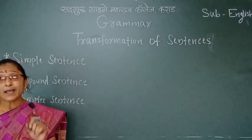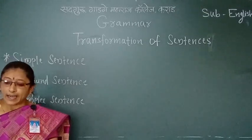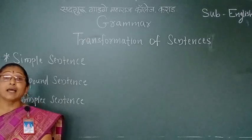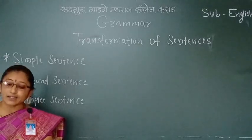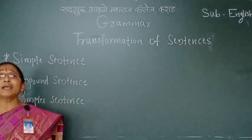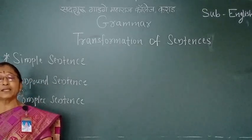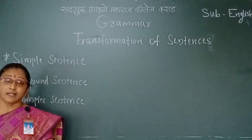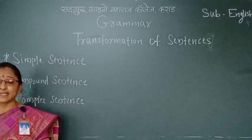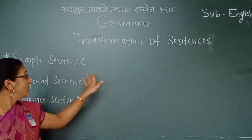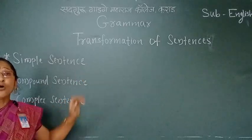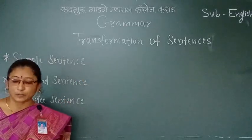In Marathi: jaha vakya madhe ekaj buddhesh huwa ekaj vidhe aste, teala saadhe vakya se mantad. Means a sentence with only one subject and one predicate is called a simple sentence. In a simple sentence there is only one main clause.